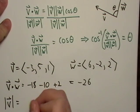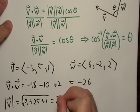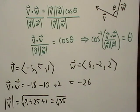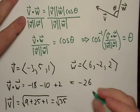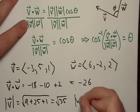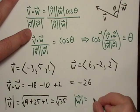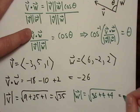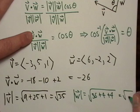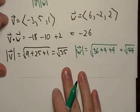What's the magnitude? That's nine plus 25 plus one equals square root of 35. Let's switch our colors right here and magnitude of w. That looks like 36 plus four plus four, which equals square root of 44.